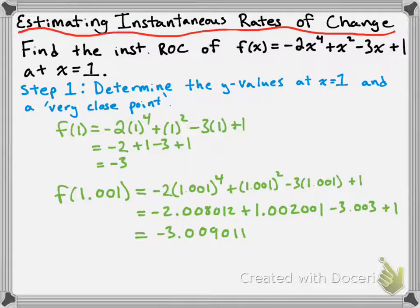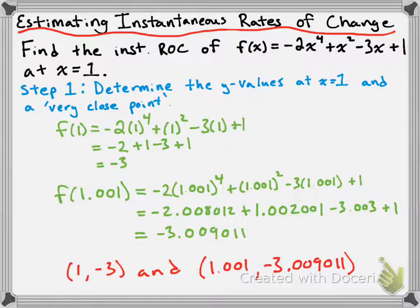I want to draw your attention to the fact that this value is very, very close to the y value we found when we calculated f(1). The y values are close because the x values are close — 1 is very close to 1.001. These are technically two distinct points with different x and y values. However, since they are so close together, the slope of the secant line between them will be a very good estimate for the tangent line. So we have two distinct points: (1, -3) and (1.001, -3.009011).